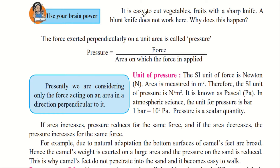It is easy to cut vegetables and fruits with a sharp knife; a blunt knife does not work as well. A blunt knife is one that was earlier sharp but has lost its sharpness due to repetitive use. When you use a blunt knife, you have to put more force to cut fruits or vegetables. This happens because the sharp knife has a thinner edge and therefore we use less pressure to cut.